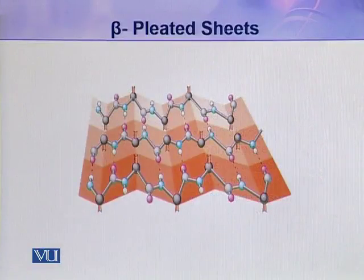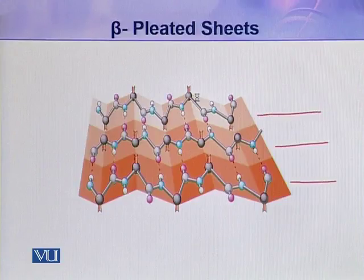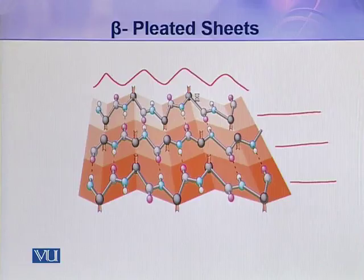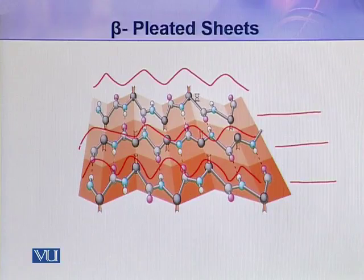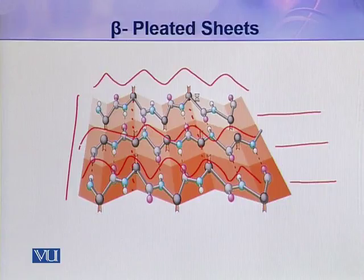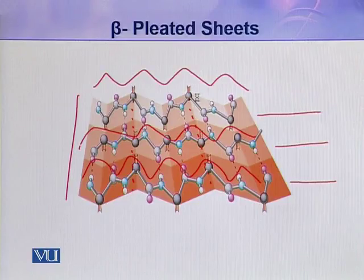Here you can see three polypeptide chains — 1, 2, and 3 — arranged in a zigzag manner. When these three zigzag chains arrange side by side they make a sheet, and in this sheet you can see the pleats. This is called a beta pleated sheet in which the chains are arranged side by side.